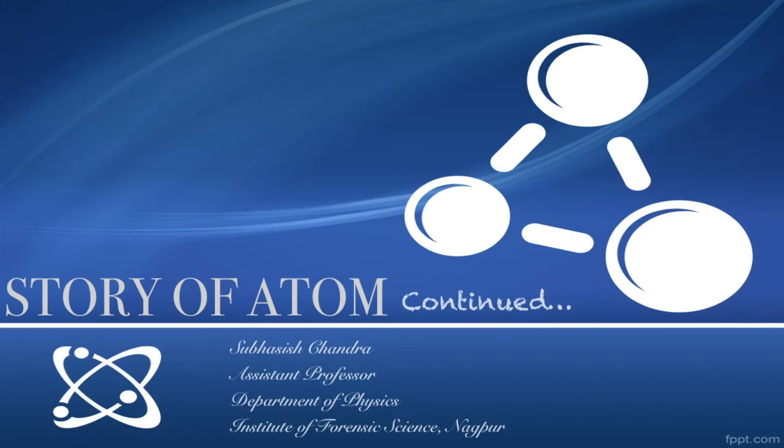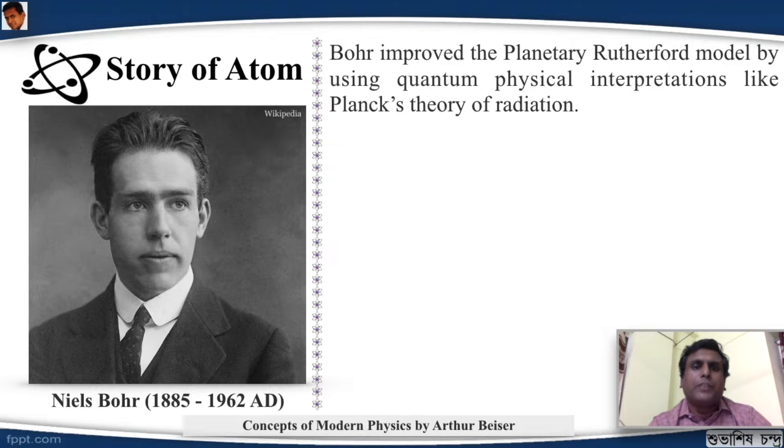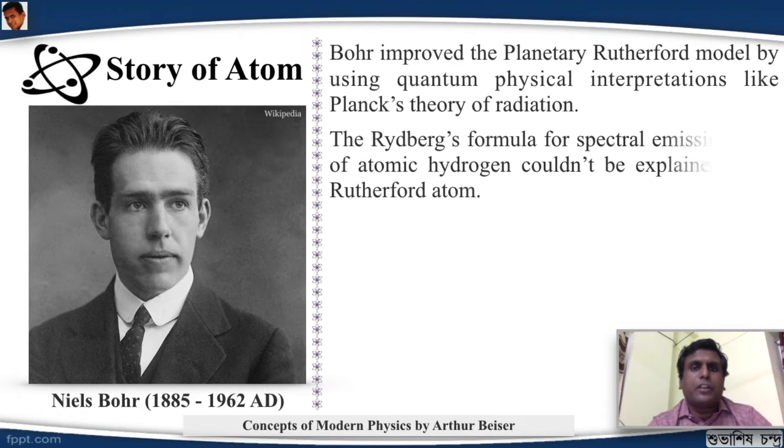Now we will shift to the theoretical aspects of the atom. The man who looked into it theoretically and gave a model was Niels Bohr. He was influenced by Ernest Rutherford, Albert Einstein and Max Planck. So he improved the planetary Rutherford model by using quantum physical interpretations like Planck's theory of radiation. The Rydberg formula for spectral lines of atomic hydrogen couldn't be explained using Rutherford atom as it showed different lines whereas for the planetary model it should have shown only one single line.